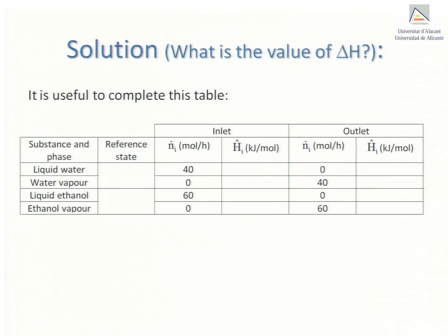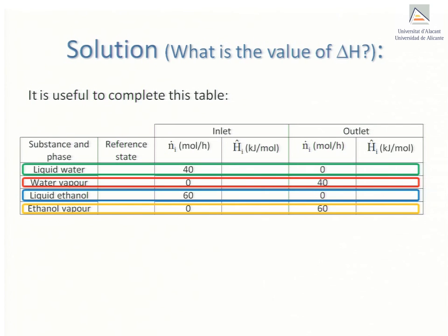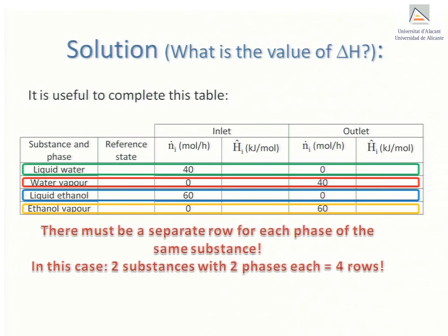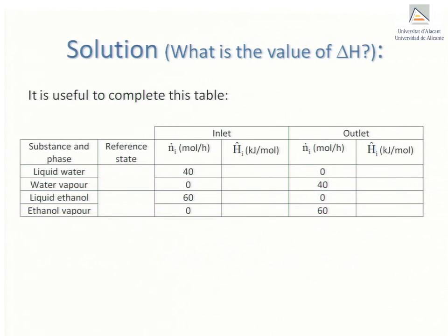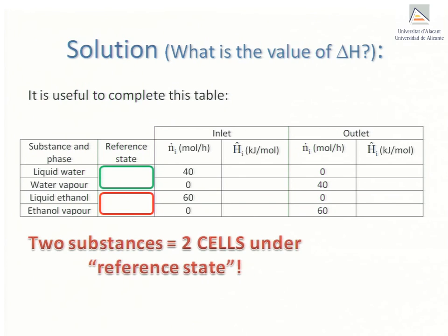It is extremely important that the phases of all involved substances appear in a separate row. In this case, there is a row for liquid water and another for water vapour. One for liquid ethanol and another for ethanol vapour. Our table, which has been drawn up for two components, requires four rows in total, one per each phase. However, a reference state corresponds to a particular substance and thus, in reality, we require only two cells here. One for the reference state of water and another for that of ethanol.